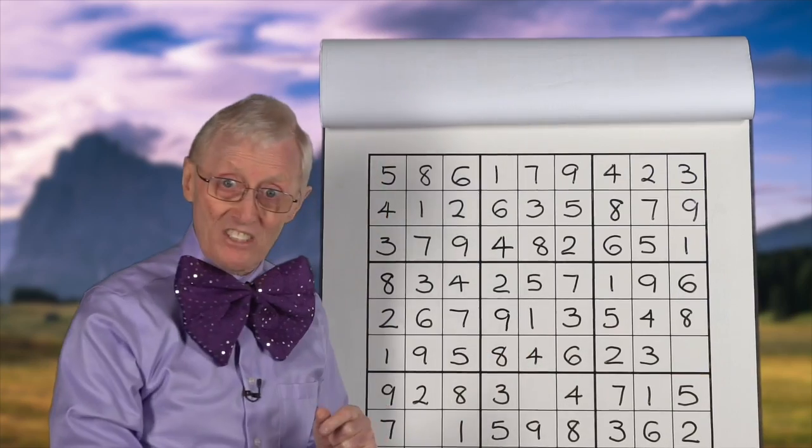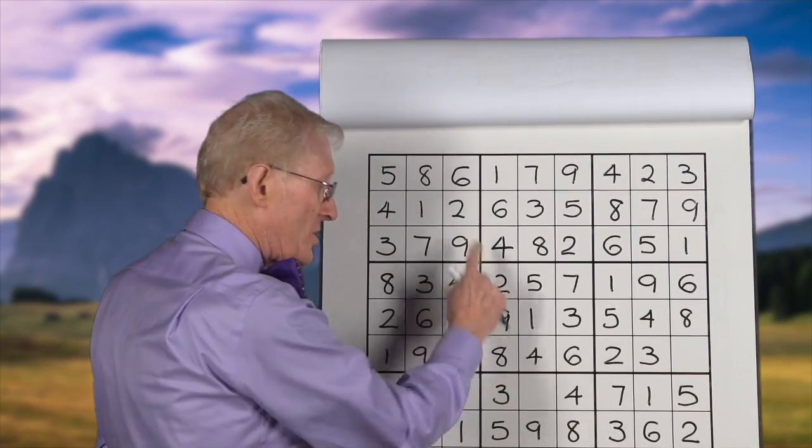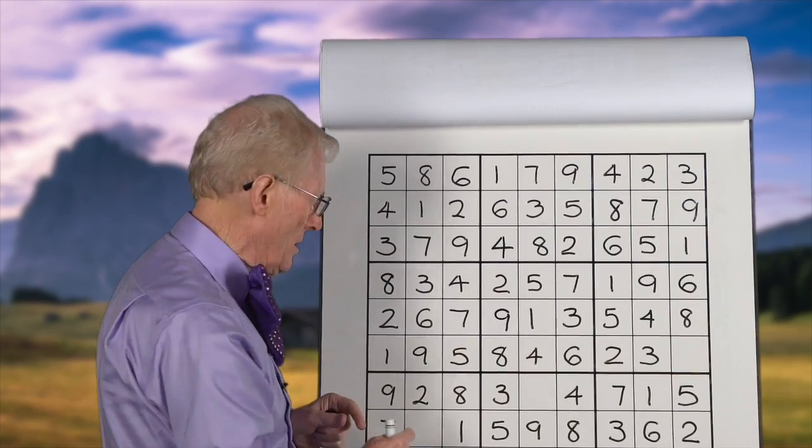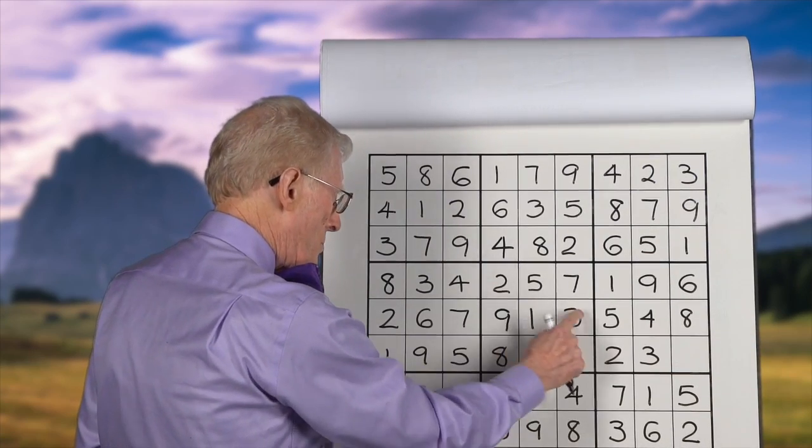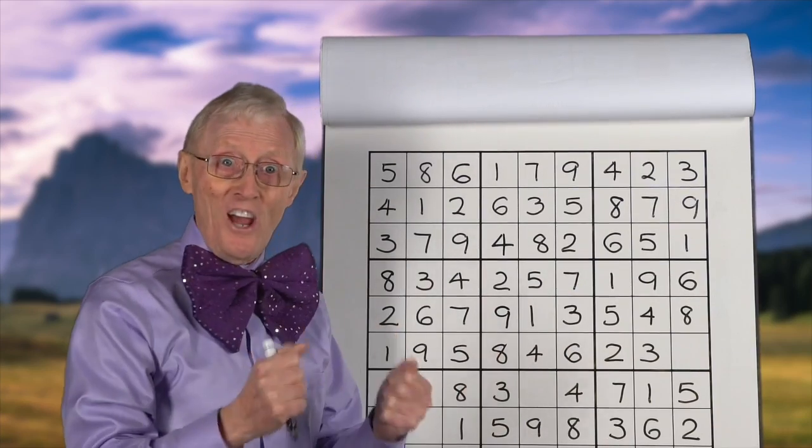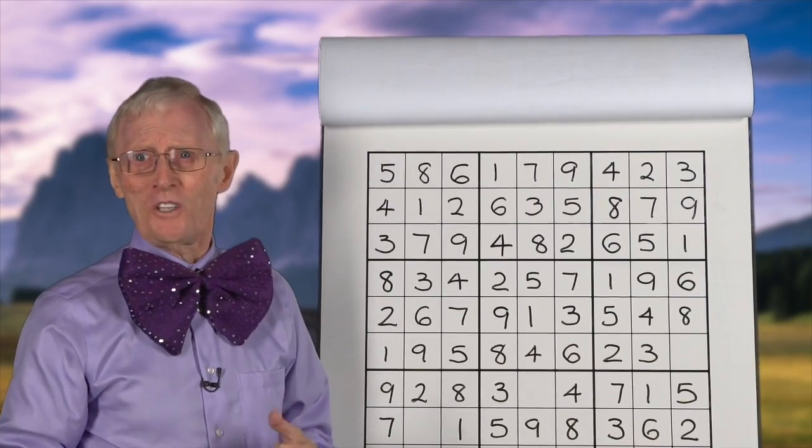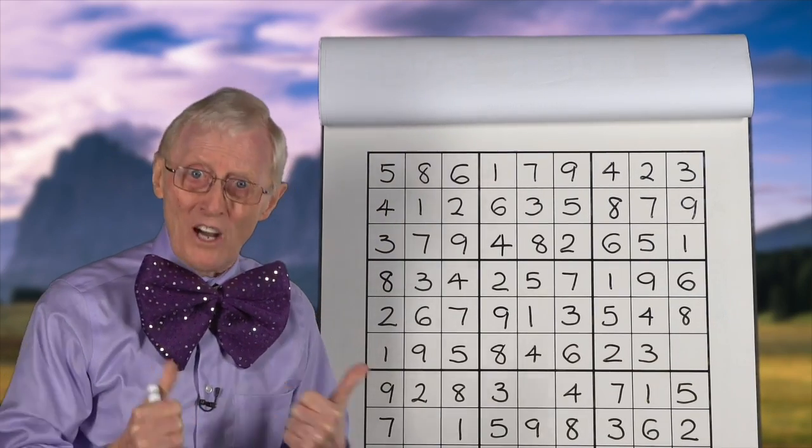And we can self-check ourselves by checking this block because there was only one left in that block. We can go 1, 2, 3, 4, 5, 6, 7, 8, 9. We know we've done it right. So guess what? We don't have to go to the answer sheet. We know it's right.